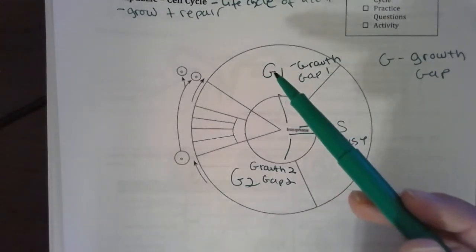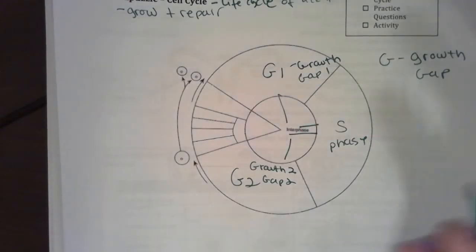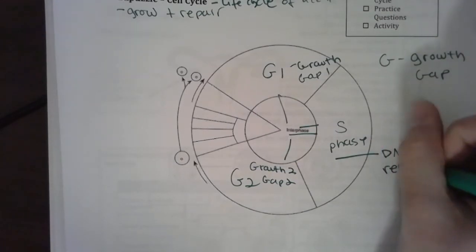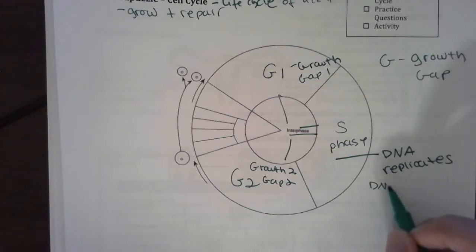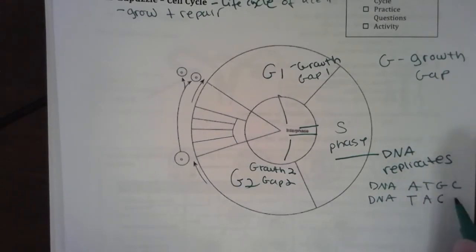In G1, the cells performing its regular functions, going on about its life. The S phase is when DNA replicates. Okay, remember when DNA replicates: if I have a strand of DNA that's like A-T-G-C and I want to make another copy of DNA, that's like A to T, T to A, G to C, C to G - I just replicated DNA, congratulations to me.